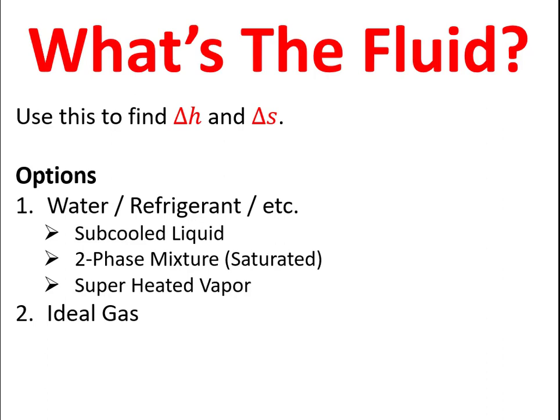Then in this cycle, we'll ask ourselves, what's the fluid? And we can use that information to fix states and find enthalpies and or entropies. In this case, we'll be looking at a refrigerant. So we'll know that then we need to know the phase of the refrigerant. Is it sub-cooled or a two-phase mixture or a superheated vapor? And if the working fluid is ideal gas, then we have to ask ourselves, do we have constant-specific heat or variable-specific heat?